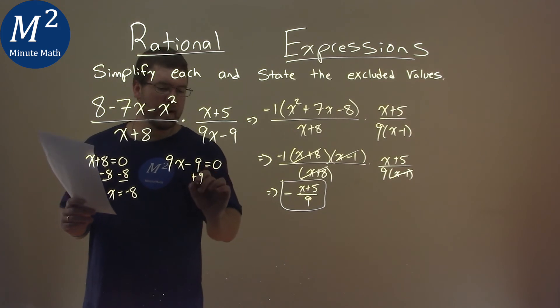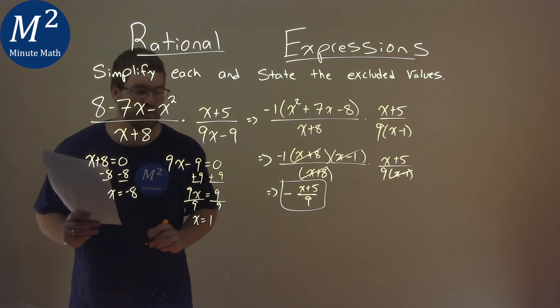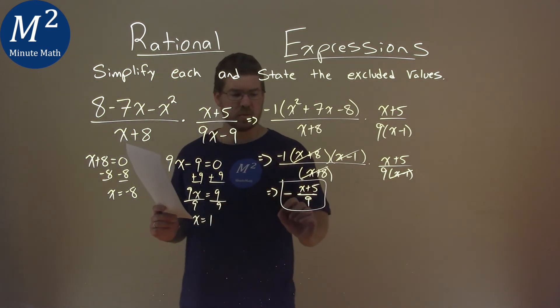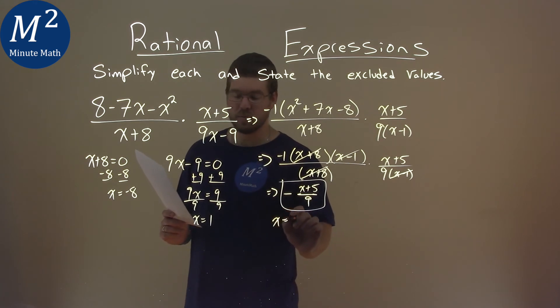Let's add a 9 to both sides. So we have 9x equals a positive 9. Divide both sides by 9, and x equals a positive 1. And so my two excluded values are x equals negative 8 and positive 1.